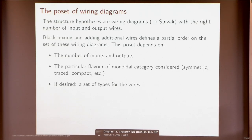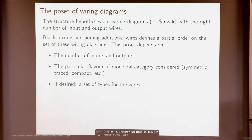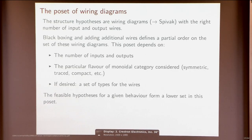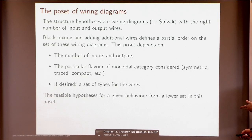One can also introduce a set of types for the wires — for example, in circuit complexity you might want each wire to be a bit rather than an arbitrary system, so you can label wires with additional types. But you don't need to; in that case wires are allowed to carry arbitrary objects. The feasible hypotheses are stable under black boxing and adding additional wires, which means they form a lower set in this poset.